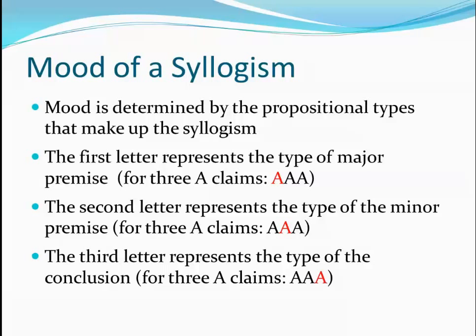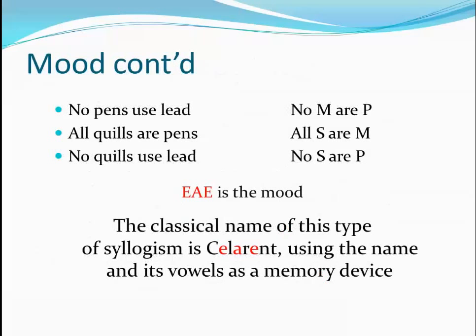The mood of a syllogism is simply the letters that represent the standard claims in the syllogism written in a row. So an A-A-A syllogism means that the major premise is an A claim, the minor premise is an A claim, and the conclusion is an A claim. Scholars of logic in the Middle Ages developed convenient ways of remembering the moods by using names that use the letters of the moods — for example, the name 'syllogism' refers to the syllogism in the E-A-E mood.